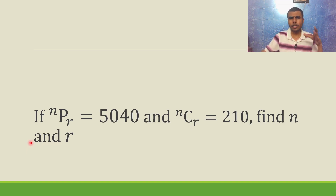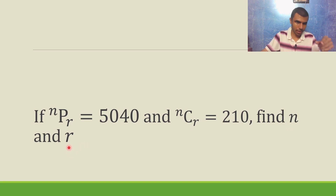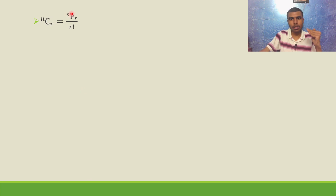Hello learners. Here nPr is 5040 and nCr is 210. We have to find out n and r. There is a formula which you need to remember: nCr equals nPr divided by r factorial.